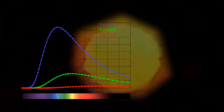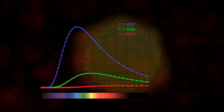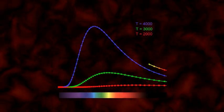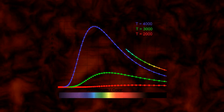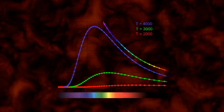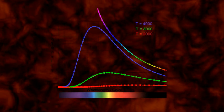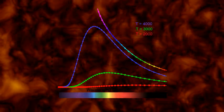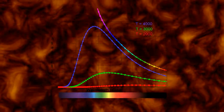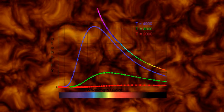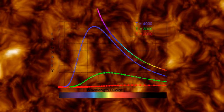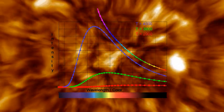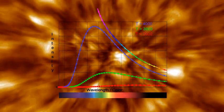But there was a problem. The scientists expected the distribution of emitted light to continue to increase at wavelengths toward the ultraviolet end. It didn't. Instead, there was less and less light given off as they moved further and further into the ultraviolet. This was called the ultraviolet catastrophe. But it wasn't a catastrophe at all — it was the beginning of something remarkable.